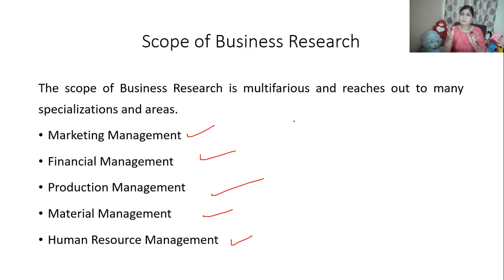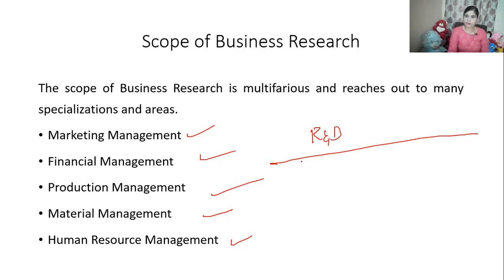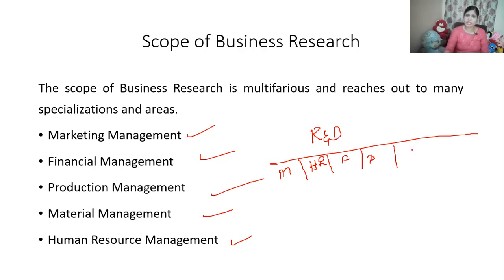There are many departments. There is a department within the organization itself called the research and development department. When you study the functional departments in principles of management, we fundamentally study four main departments: marketing, HR, finance, and production. Then we have many more departments like purchase, accounts, and selling. Importantly, we have the research and development department. All big organizations that can afford this department will have a research and development department in their own organization to look after research and development activities.